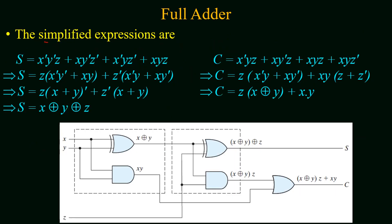Making equations for both sum and carry in the form of sum of products from the truth table of the full adder, and further simplifying these equations using the rules of boolean algebra, we get: sum S = x XOR y XOR z, and carry output C = z(x XOR y) + xy. The logic gate diagram of both equations is shown in the figure.